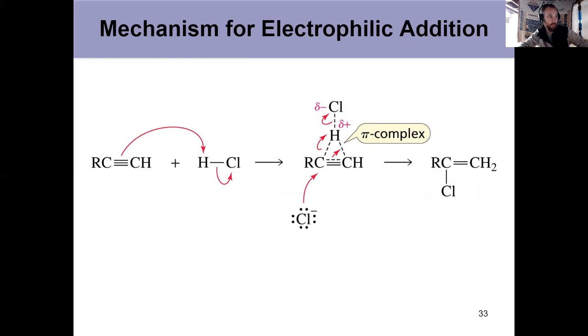The alkyne nucleophile reacts with an electrophile to form a pi complex. And then the nucleophile comes in, attacks the pi complex, breaks these bonds, breaks that bond, that forms a halo substituted alkene.